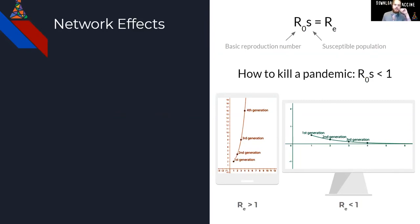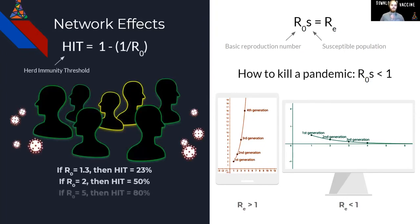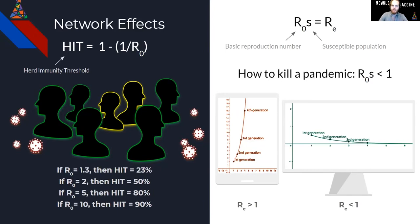The herd immunity threshold (HIT) is also a function of a disease's reproductive number — essentially, the higher the reproductive number, the higher the threshold for population-scale immunity. Once the population immune to a disease exceeds that disease's immunity threshold, the number of cases reduces at a faster rate, outbreaks are less likely to happen, and outbreaks that do occur are smaller. It's important to note that the herd immunity threshold doesn't represent the point at which disease stops spreading altogether, but rather the point at which each infected person infects fewer than one additional person on average, essentially modulating R_E and diminishing the incidence of disease.